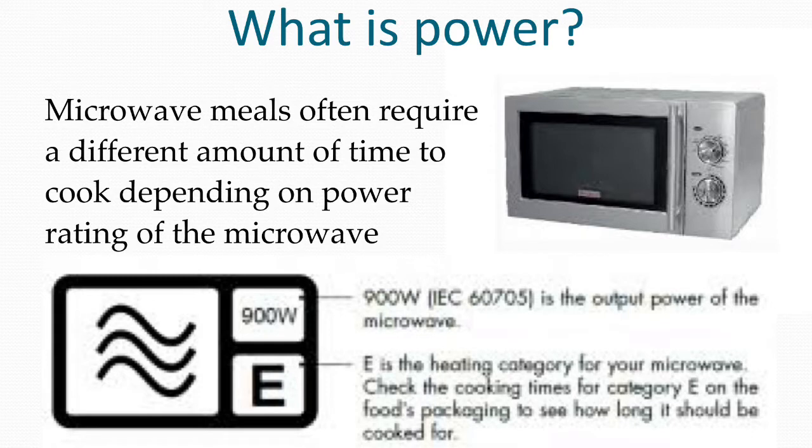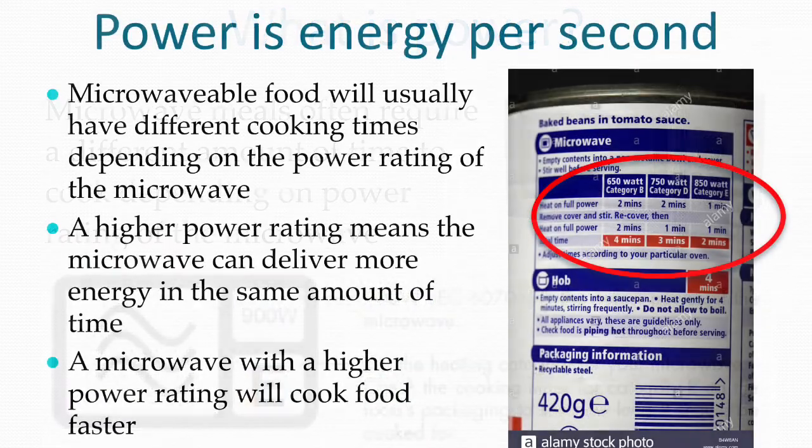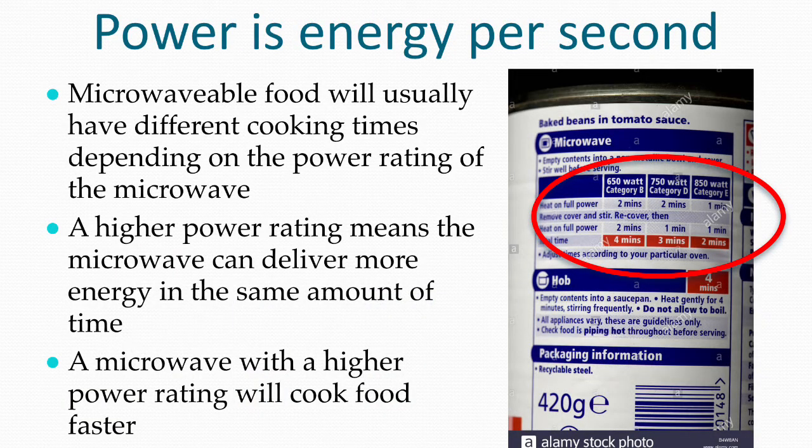Microwave meals will often have different cooking times listed depending on the power of the microwave that's being used. A more powerful microwave will have a shorter cooking time because it can deliver the energy required in a shorter amount of time.